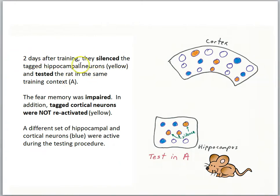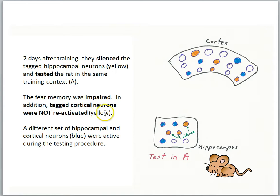Two days after training, they silenced the tagged hippocampal neurons — the engram cells in the hippocampus — using yellow light, and then tested the rat in the same training context. They were trained in context A, and now tested in context A, but while the rat was placed back in that same context, only the hippocampal cells were being silenced. The fear memory was impaired. In addition, the tagged cortical neurons were not reactivated, even though no light was shined in the cortex — the relevant cortical engram cells were not activated.